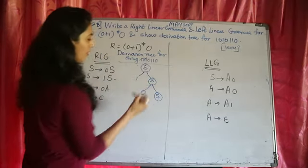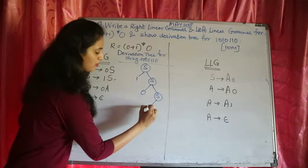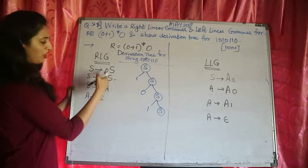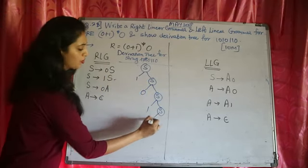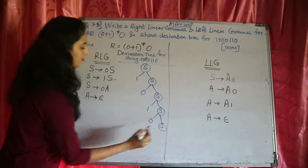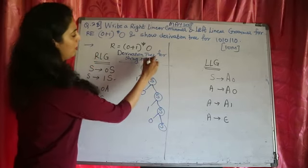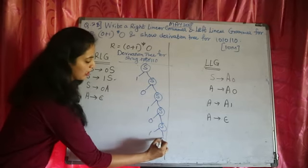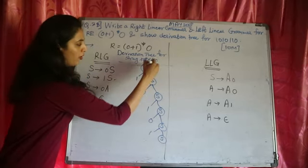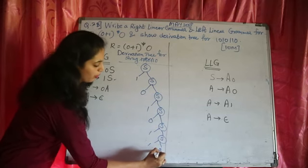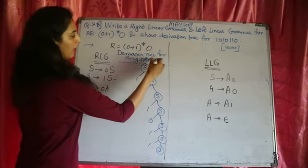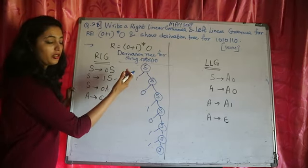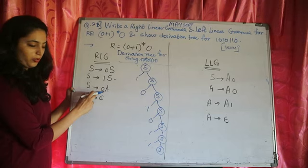After this 0, I want 1, so I will use S → 1S. After this 1, I want 0 again with the repeating loop, so I use S → 0S. Then I want 1, 1, 0. I use S → 1S again, then S → 1S again. Now I want the last 0 and then I want to stop. If I go with S → 0S I will have to continue, so I use the third rule S → 0A.